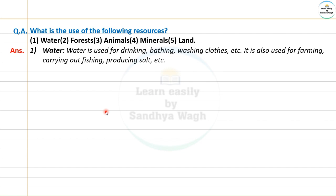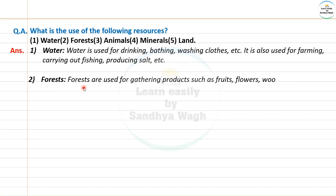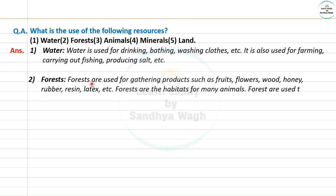Next, forests: forests contain many types of trees with different varieties of fruits and flowers. From forests we get timber, rubber, and other products. Forests are used for gathering products such as fruits, flowers, wood, honey, rubber, resin, and latex. Forests are also the habitats for many animals, and forests are used to maintain ecological balance.